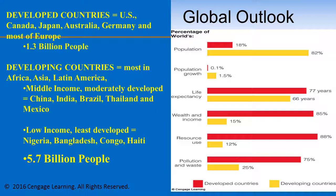Middle-income or moderately developed countries include China, India, Brazil, Thailand, and Mexico. Low-income or least developed countries include Nigeria, Bangladesh, Congo, and Haiti. The number of people living in developing countries, whether in the middle-income moderately developed or low-income least developed category, is about 5.7 billion people.